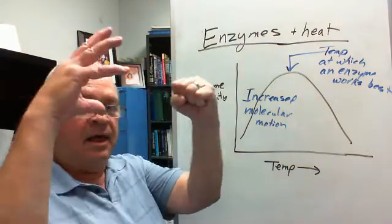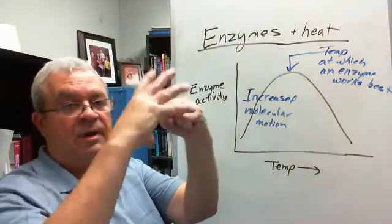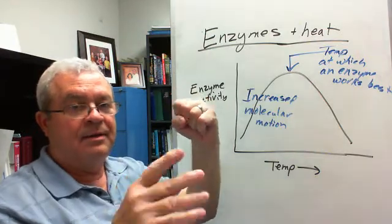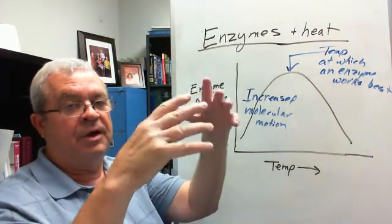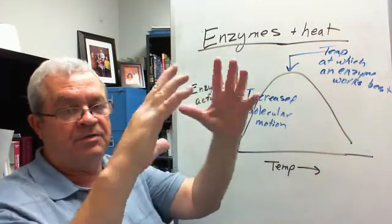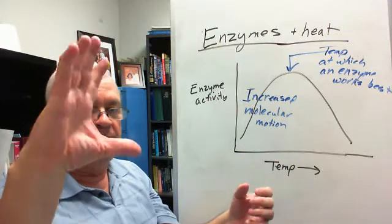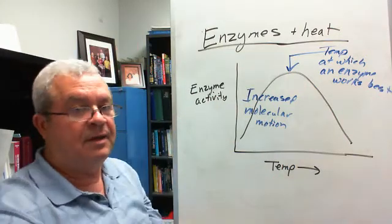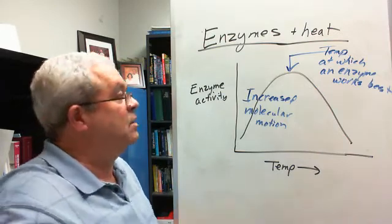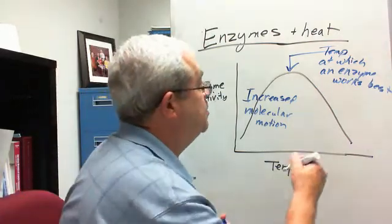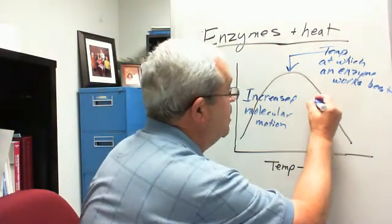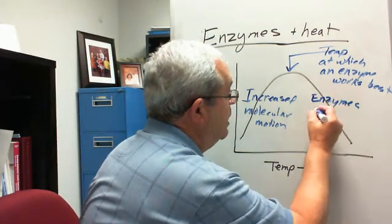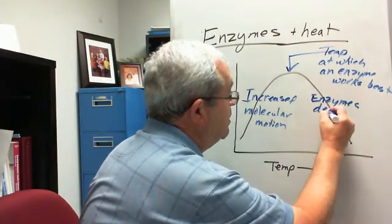Mr. Blue Guy gets bounced around too fast and falls apart. These tertiary and quaternary levels of structure all come unraveled. Is the active site there anymore? Does it have the right shape for the substrate? No. And so the explanation for the downslope is the enzymes denature.